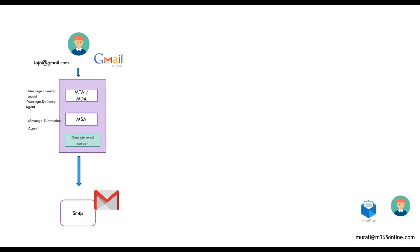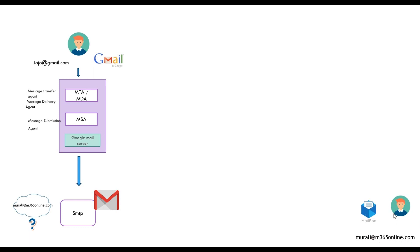The SMTP service knows it needs to deliver this email to murally at m365only.com, but it doesn't know where this user is or who murally is. The SMTP service knows that if it can find the domain m365only.com, it can find this user as well. So it tries to find out the domain first.